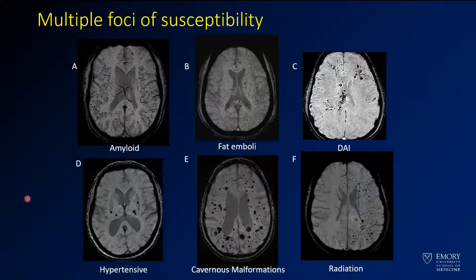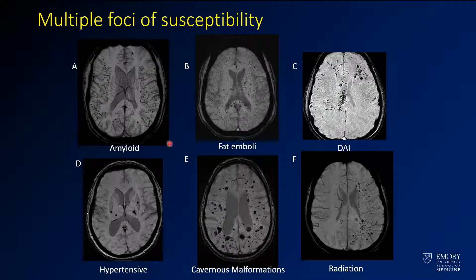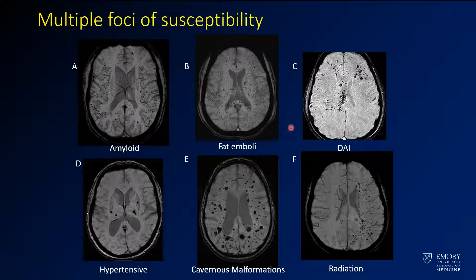Here is a variety of examples of hemorrhage on susceptibility-weighted imaging from different abnormalities. You can see amyloid in example A with a peripheral distribution mostly at the gray-white junction. These next ones are actually fat emboli — you can see how fat emboli can have a similar appearance to amyloidosis, with more involvement of the corpus callosum and much finer lesions, like a very fine showering of disease.